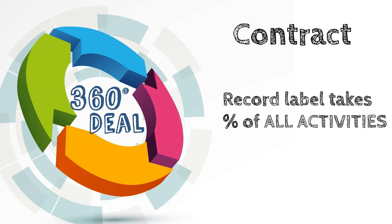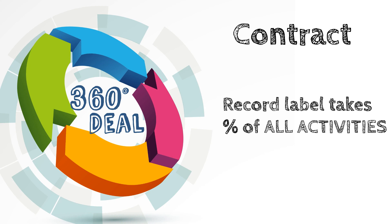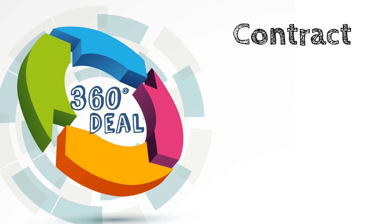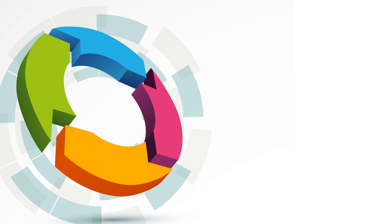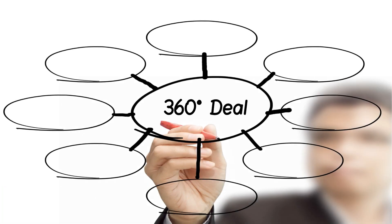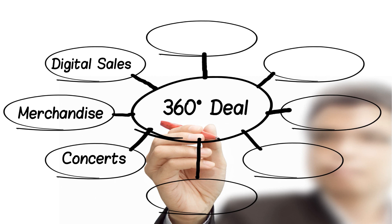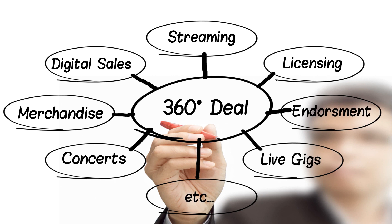360 deals, also called multiple rights deals, are contracts where the record labels earn a percentage of the artist's ancillary rights. These rights may be the earnings made from concert revenue, merchandise sales, digital sales, streaming royalties, licensing, endorsement deals, and any other income stream you may think of.